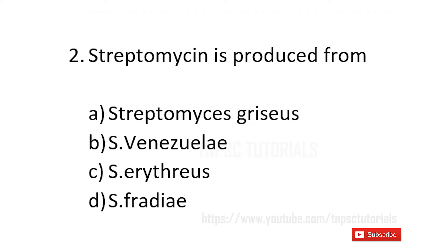Streptomycin is produced from A. Streptomyces griseus, B. S. venezuelae, C. S. erythreus and D. S. fradiae and the answer is A. Streptomyces griseus.